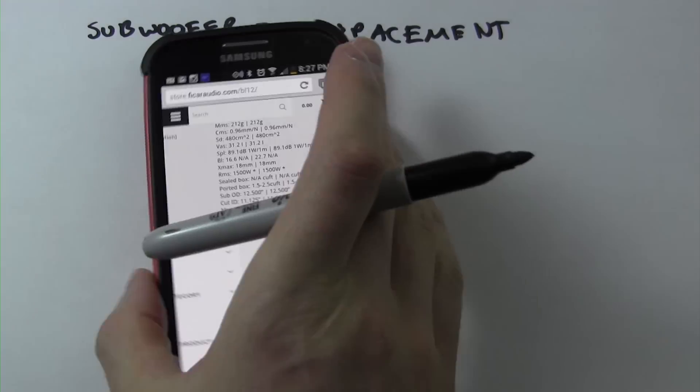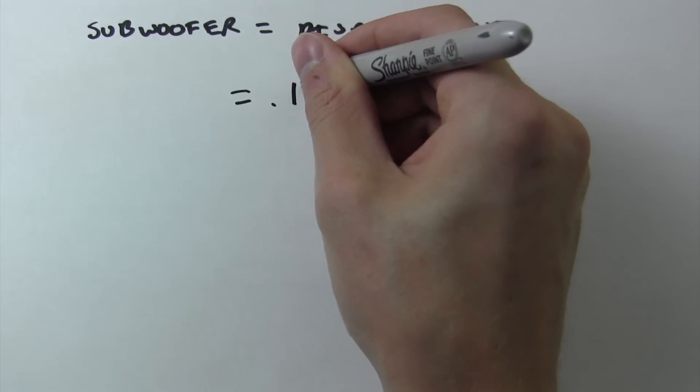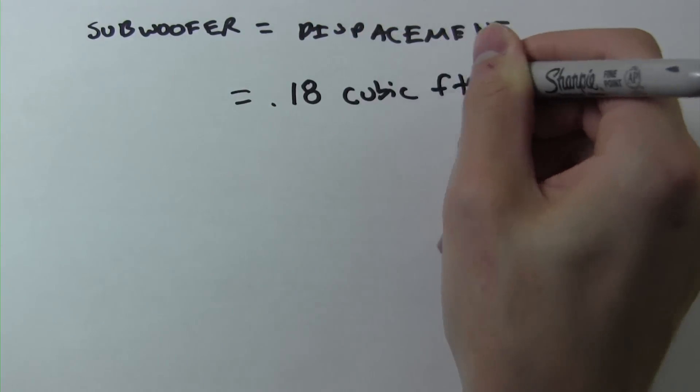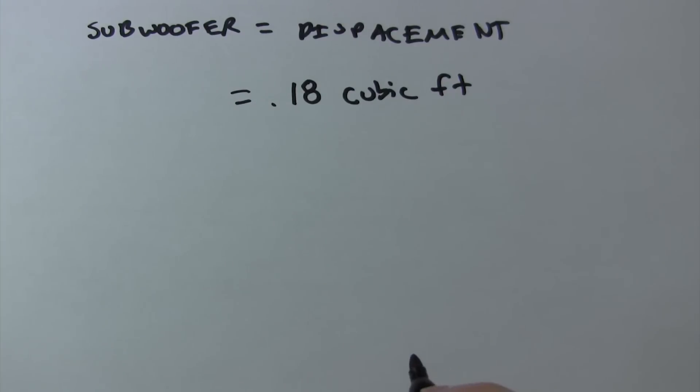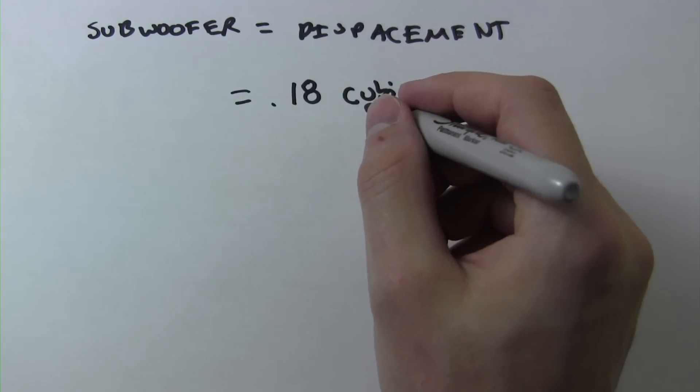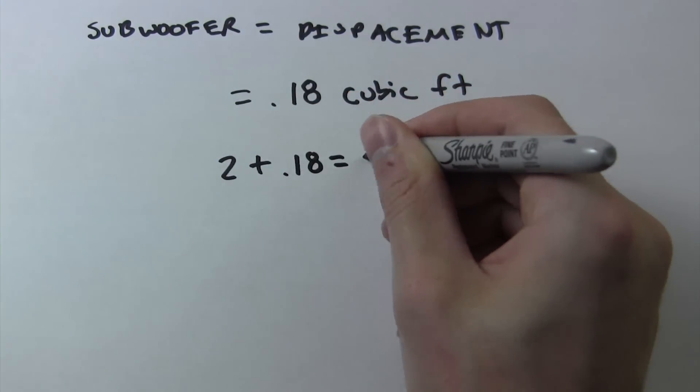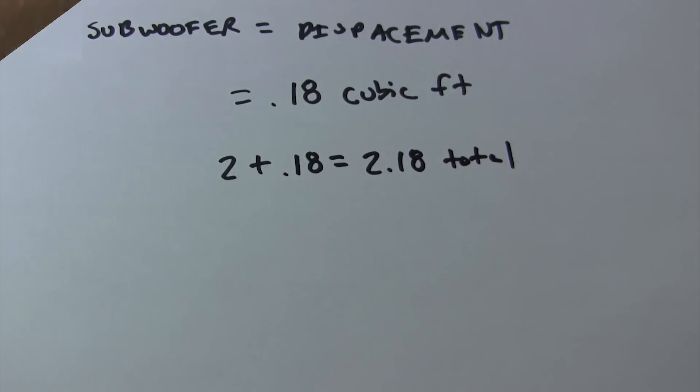We will use it by adding to the total volume that we need for the box. So in this case, as an example, we found that this particular 12 inch subwoofer was 0.18 cubic feet in volume. So we simply added it to our original 2 cubic feet for a total of 2.18 cubic feet.